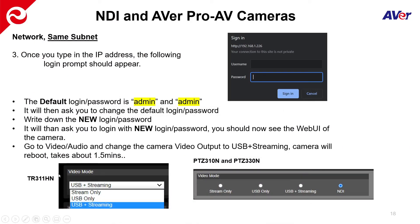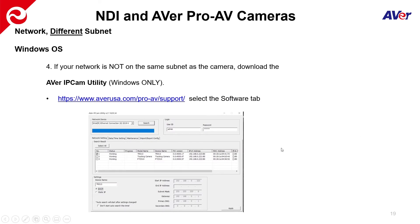This is what the TR311HN looks like in that menu. For the PTZ310N and the 330N, you similarly select USB Plus Streaming and it will also ask you to reboot.